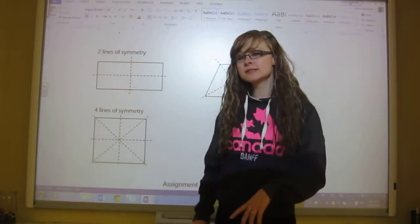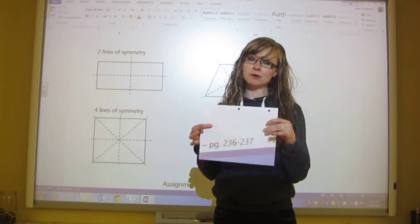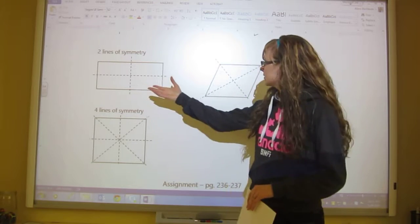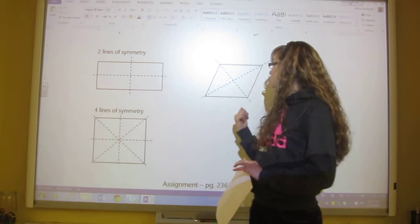Next up we've got two lines of symmetry. So some shapes have two lines of symmetry such as this paper. It has two lines of symmetry. So a rectangle has lines of symmetry and a parallelogram has lines of symmetry right here.